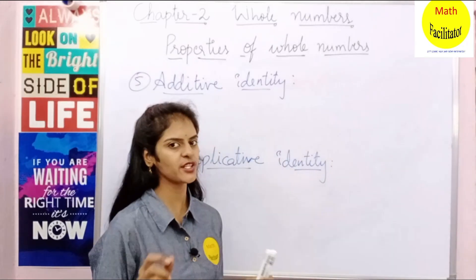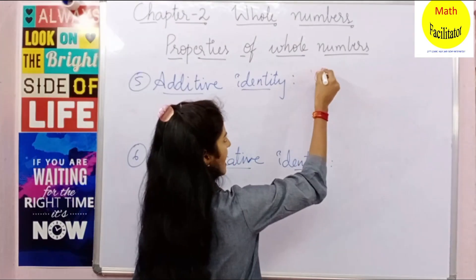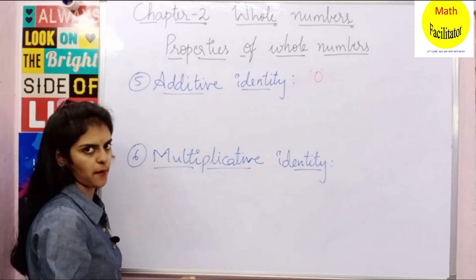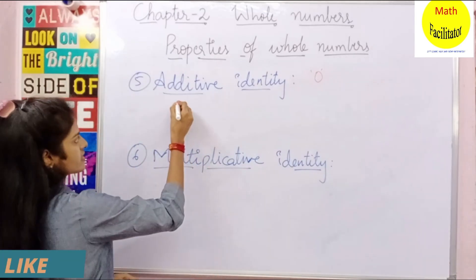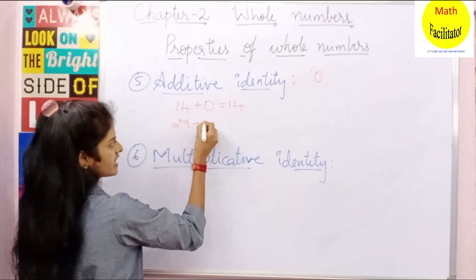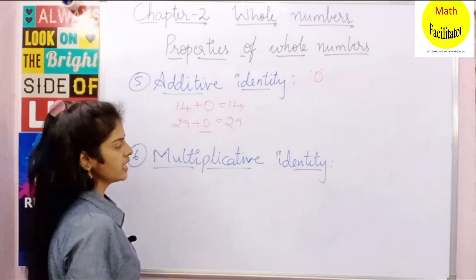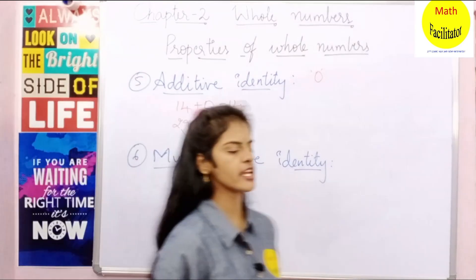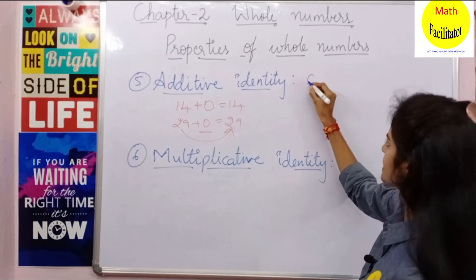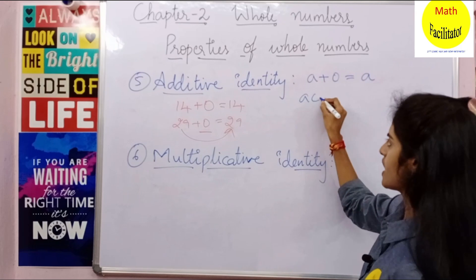Our next property is additive identity. We say that 0 is the additive identity. Why? You add 0 to any number and it gives you the same number. For example, 14 plus 0 is 14. 29 plus 0 is again 29. So you can write A plus 0 equals A, where A belongs to whole numbers.